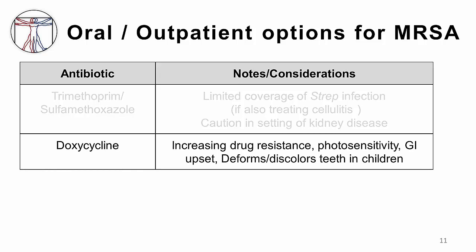Doxycycline is another reasonable oral option for MRSA infection. It is taken twice per day and is also generally well tolerated, although it can cause nausea and vomiting if taken on an empty stomach. Like trimethoprim-sulfamethoxazole, it does not have reliable coverage against strep. So if you're trying to treat a concomitant cellulitis, you cannot use this drug as monotherapy. Some areas of the country are seeing an increase in MRSA resistance to doxycycline, so check your susceptibility patterns before prescribing. One common side effect of doxycycline is photosensitivity, and patients should be advised to wear protective clothing and sunscreen while taking this antibiotic. Also, children under age 10 should avoid this medication altogether, as it can lead to teeth discoloration and malformation.